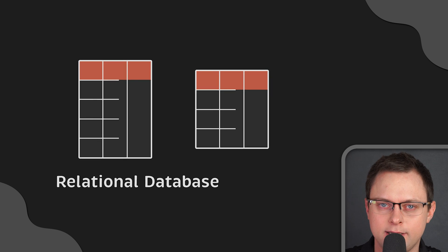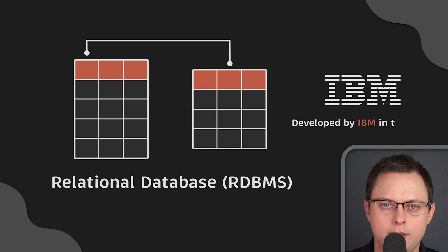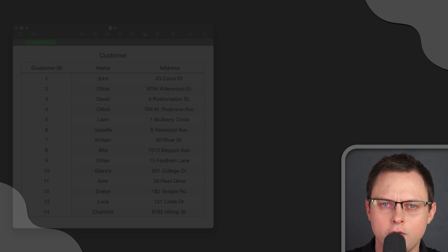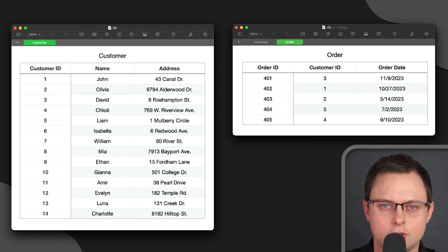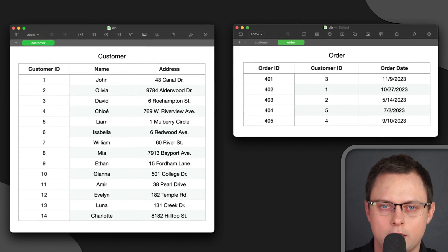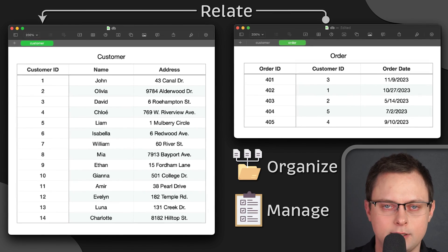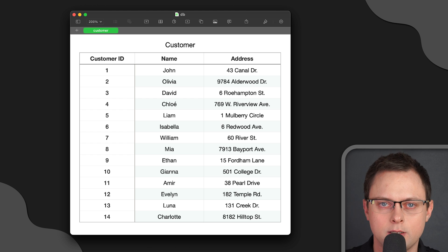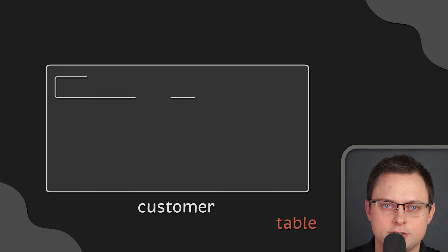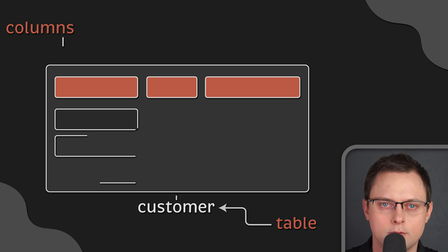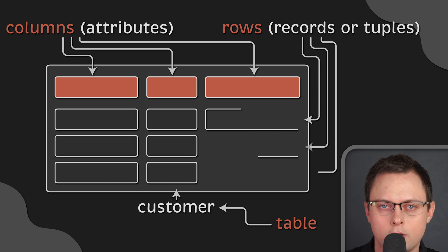Let's start with the relational database. Originally developed by IBM in the 1970s, you can think of a relational database as a collection of spreadsheet files that help businesses organize, manage, and relate data. In the relational database model, each spreadsheet is a table that stores information represented as columns (attributes) and rows (records or tuples).